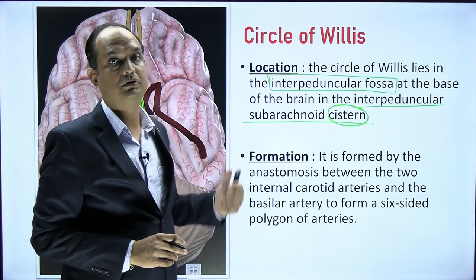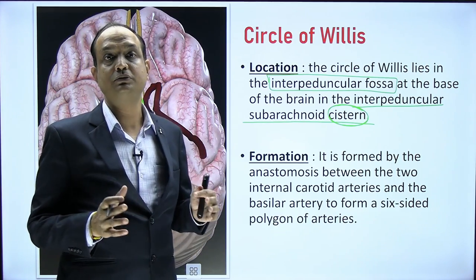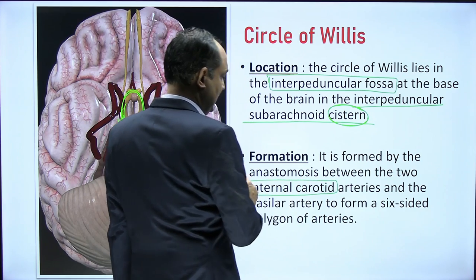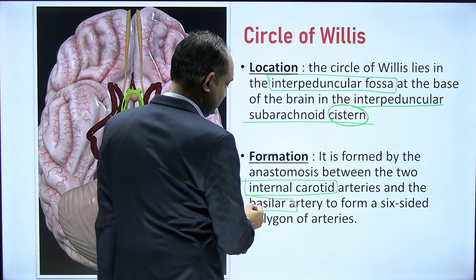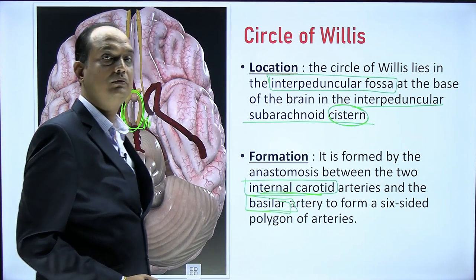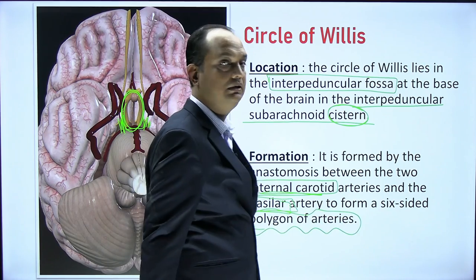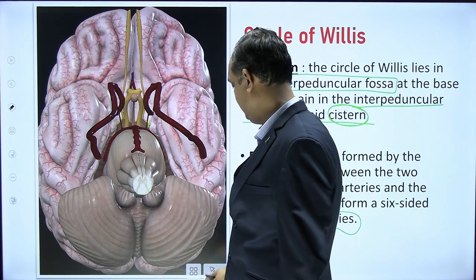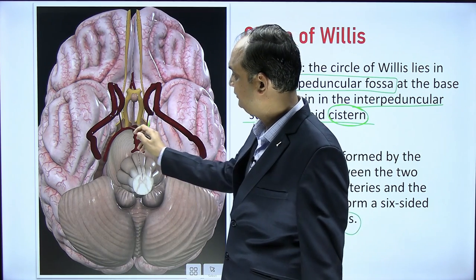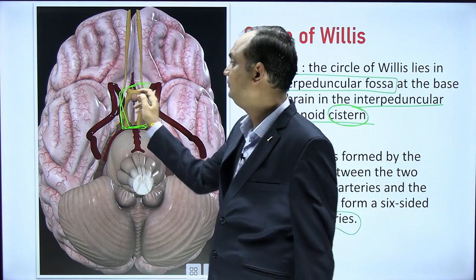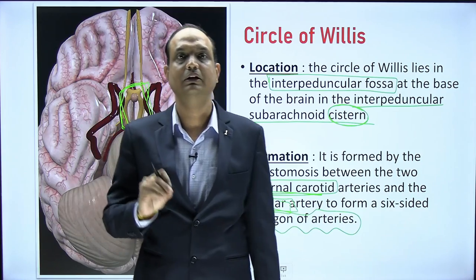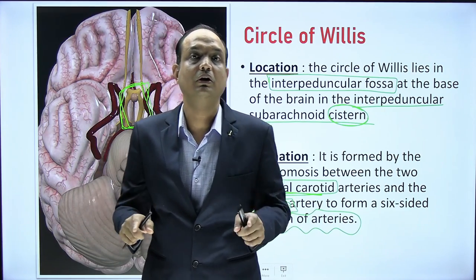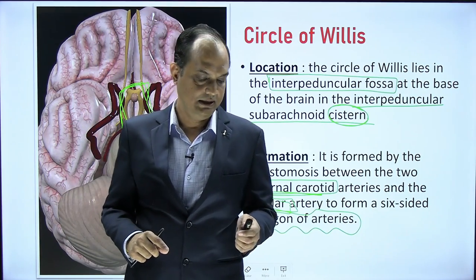The formation of the Circle of Willis involves anastomosis between two major systems: the carotid system and the vertebral system. The internal carotid artery and, from the vertebral system, the basilar artery anastomose to form a polygonal arterial arcade. This six-sided polygonal arcade is labeled the Circle of Willis, lying on the base of the brain in the interpeduncular fossa.